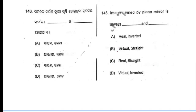Next question: the image formed by a plain mirror is always — question 146, option number B is the correct answer.